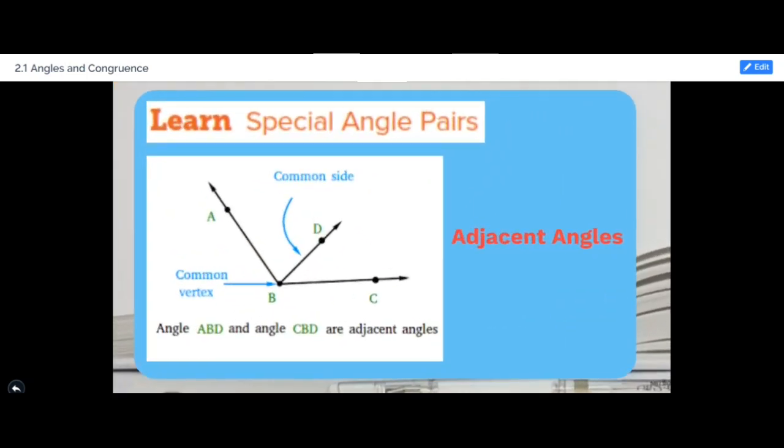We have some special angle pairs. The first angle pair is called adjacent angles. Adjacent angles have a common side and a common vertex. Like in this example, ABD and DBC are two angles that are adjacent because they have a common vertex B and a common side BD.